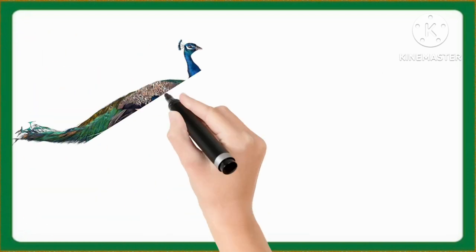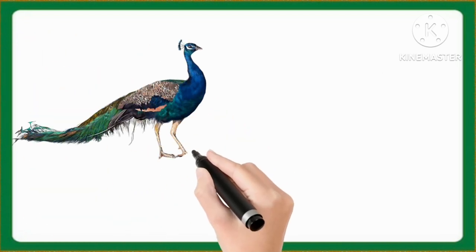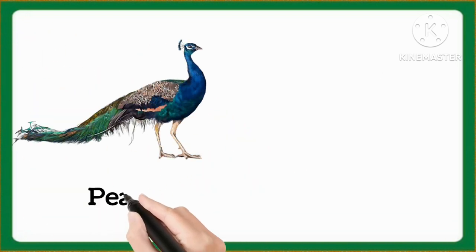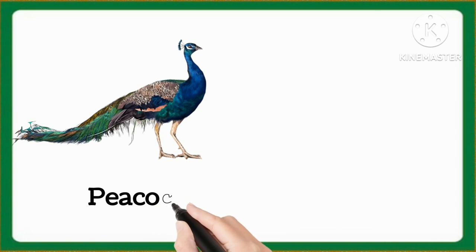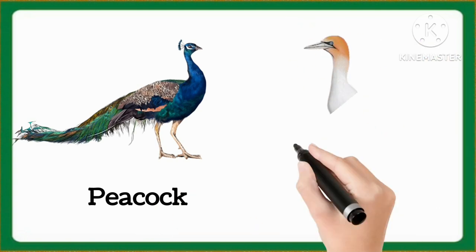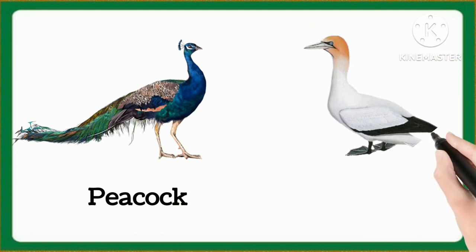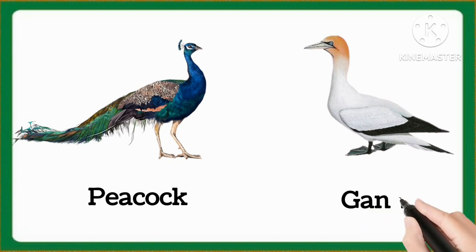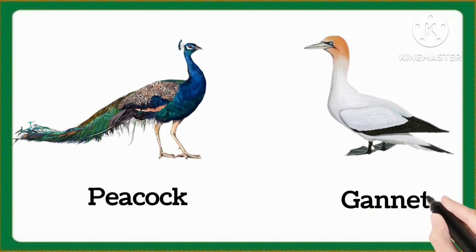And which word is this, kids? This is peacock. Peacock. And now tell me which word is this, kids? This is ganet. Ganet.